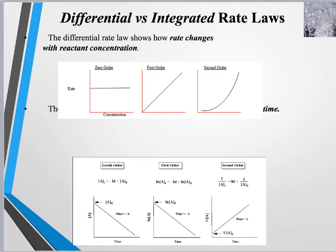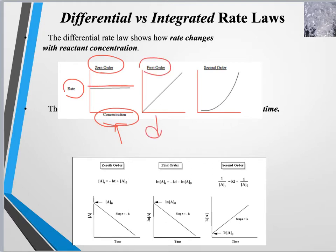Backing up for a moment to the differential rate law: it looks at rate as a function of concentration. For a zero order reaction, concentration has no effect on rate, so we get a flat line. For a first order reaction there is a direct, one-to-one linear relationship between concentration and rate. A second order reaction plotted as rate versus concentration gives an exponential relationship. In none of these plots for differential rate laws is there any variable of time.